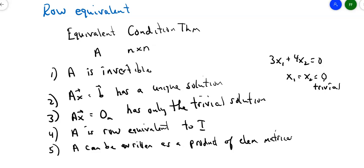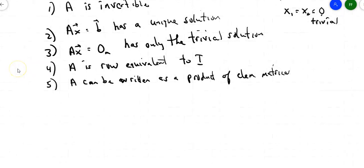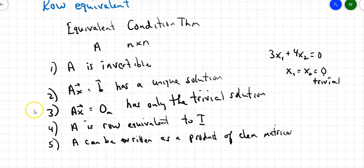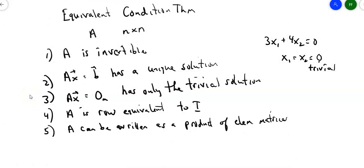One more note: the textbook covers a process called LU factorization. It's a useful but lengthy process, so I'm not going to cover it here and it will not be on the test. That's the end of section 2-4 on elementary matrices.